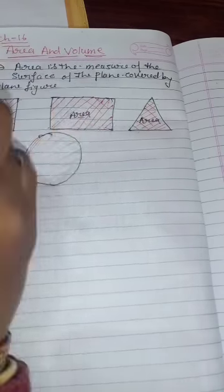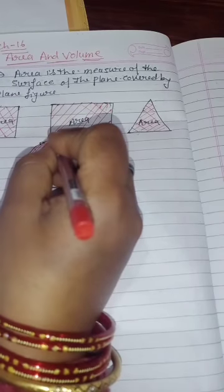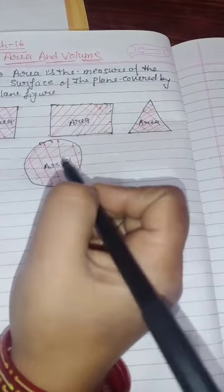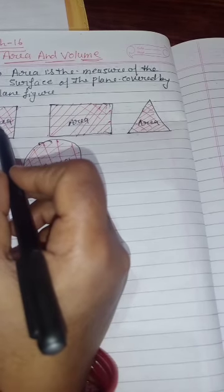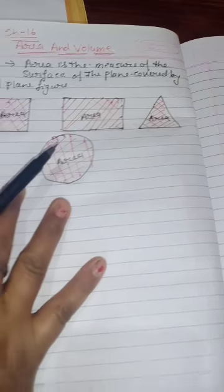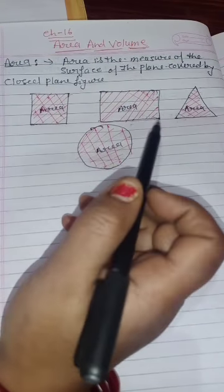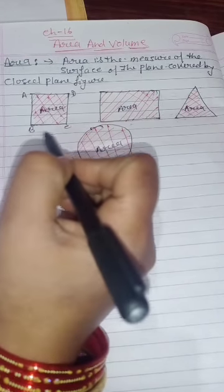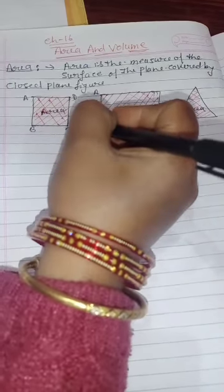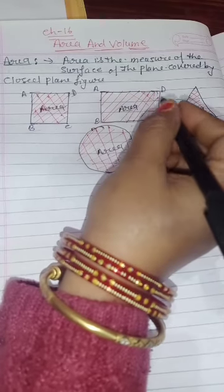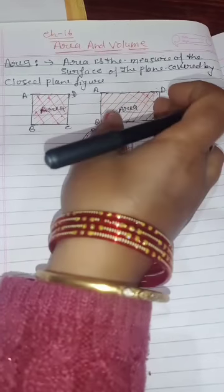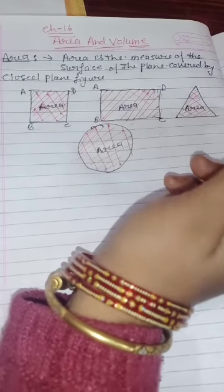Any closed figure will always have some area. Now, if I label the square ABCD and trace the black boundary lines, that is the perimeter of the square. The red shaded part — how much of the figure is enclosed by all four lines — is known as the area.